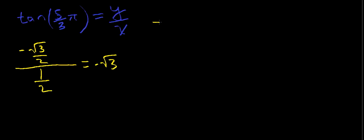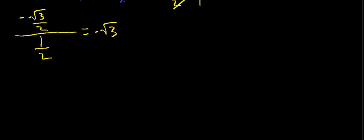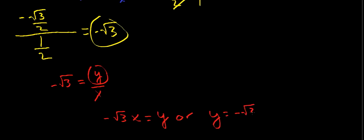To do the math: when you divide, you essentially multiply, so negative root three over two times two over one — the twos cancel out and you just get negative root three over one, which is just negative root three. So the tangent of five-thirds pi is negative root three. Therefore, negative root three equals y over x. We want to solve for y, so multiplying both sides by x gives us negative root three x equals y, or y equals negative root three x.